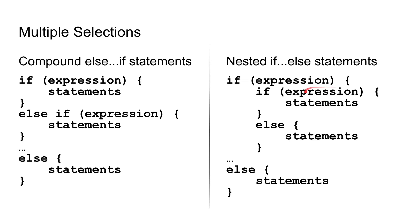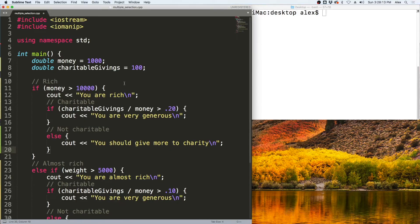One way to avoid deeply nested structures is to use larger expressions, combining two expressions with an 'and' operator to perform some set of statements inside a single if. But that's a bit more advanced. Let's take a look at multiple selection from a program.